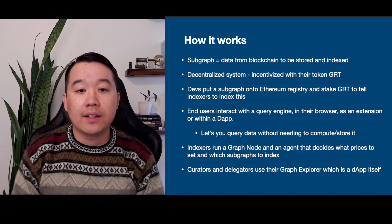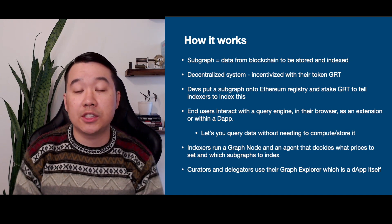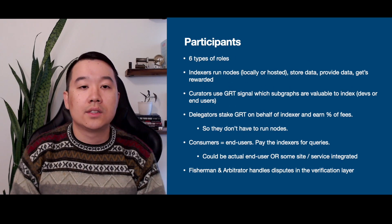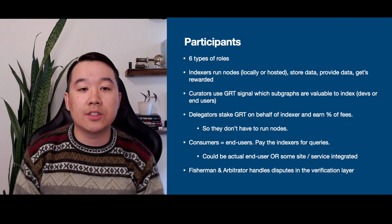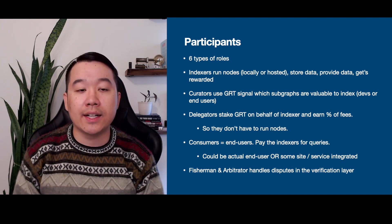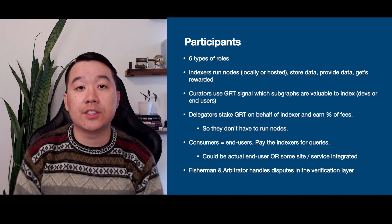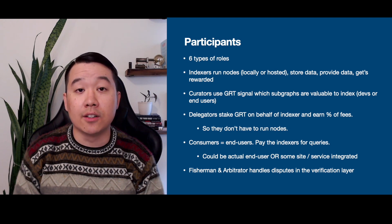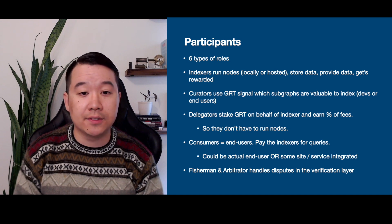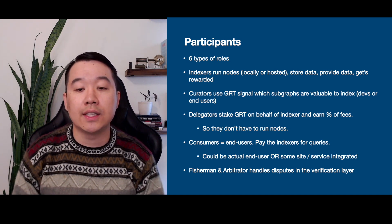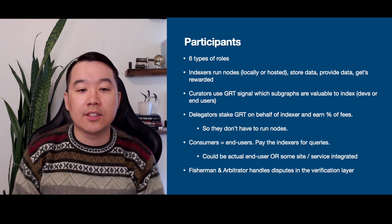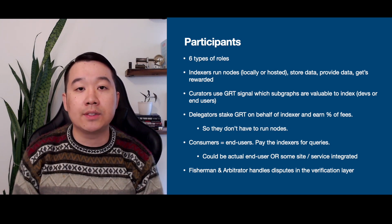Indexers run a graph node and an agent that decides what prices to set and which subgraphs to index. There are six types of roles in the ecosystem. Indexers run nodes, store data, provide data, and get rewarded. Curators use GRT to signal which subgraphs are valuable to index — this could be developers or end users. Delegators stake GRT on behalf of indexers and earn a cut of the fees, so you can do this if you don't want to run nodes yourself. Consumers pay indexers for queries — they can be end users or services integrated with the Graph Protocol. Finally, Fishermen and Arbitrators handle disputes in the verification layer.